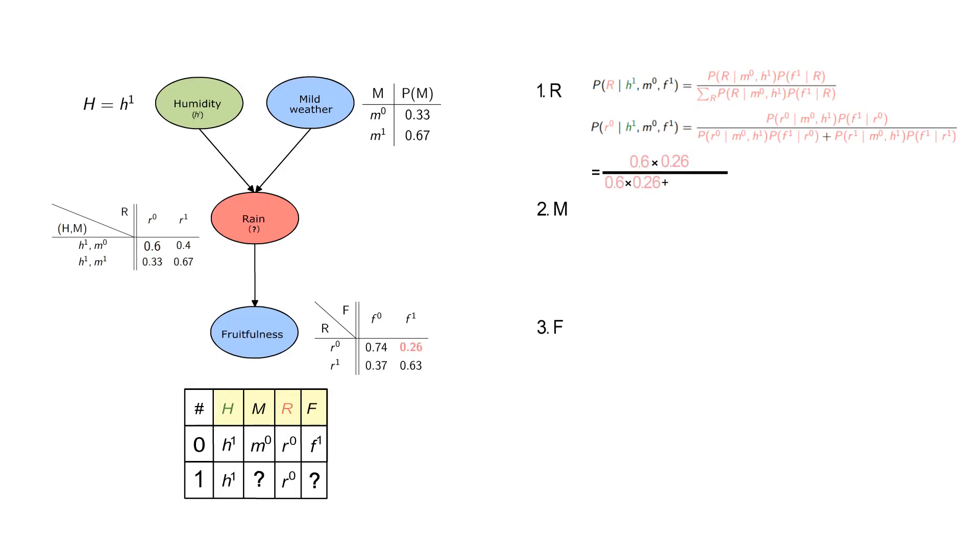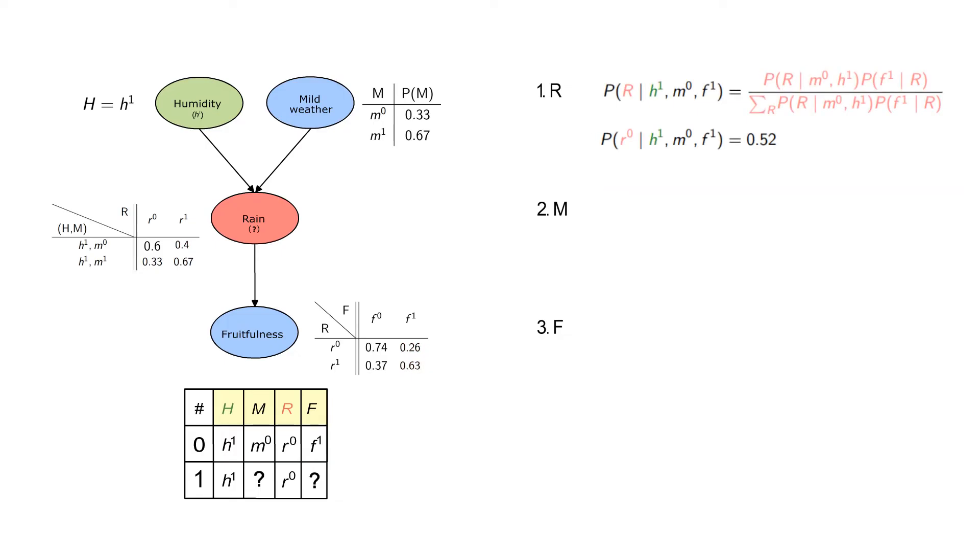We start with the variable RAIN and compute the conditional probability. Using the calculated probabilities, we update the value of the variable RAIN.